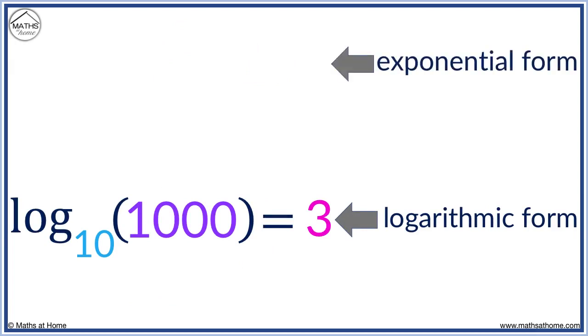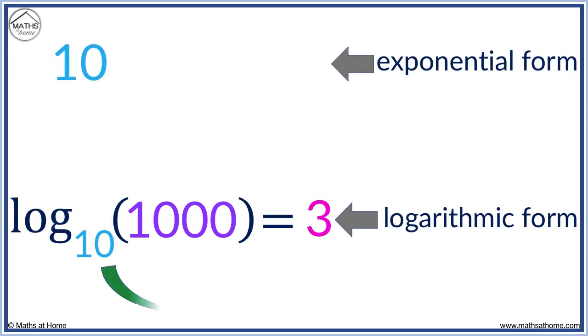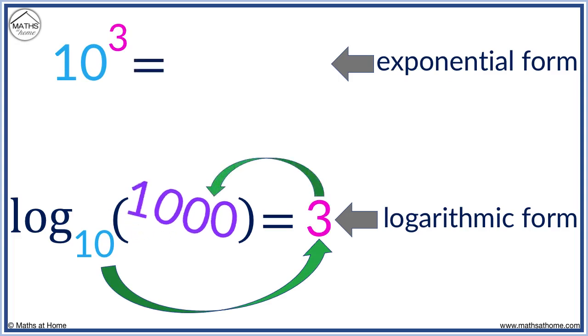Here is log base 10 of 1000 equals 3. In exponential form, we have 10 to the power of 3 equals 1000.